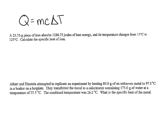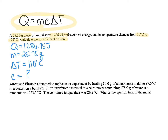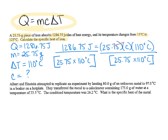Finally, you should be able to solve problems with Q = mcΔT. When you read the problem, pick out each of the different pieces of information so you can lay out the problem and solve using Q = mcΔT. The variables are laid out based on the problem, and then we set it up and solve for c by taking 1,286.75 and dividing it by the product of 25.75 times 110.